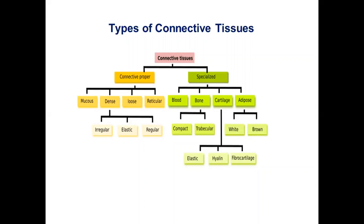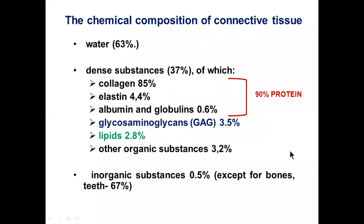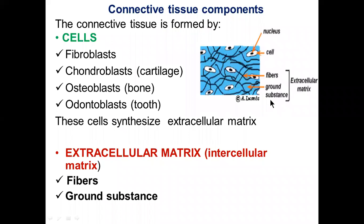Connective tissue can be divided into connective tissue proper and special connective tissue. It is composed of water (63%) and dense ground substance (37%), of which 90% is protein. The connective tissue is formed by cells and fibroblasts and an extracellular matrix.